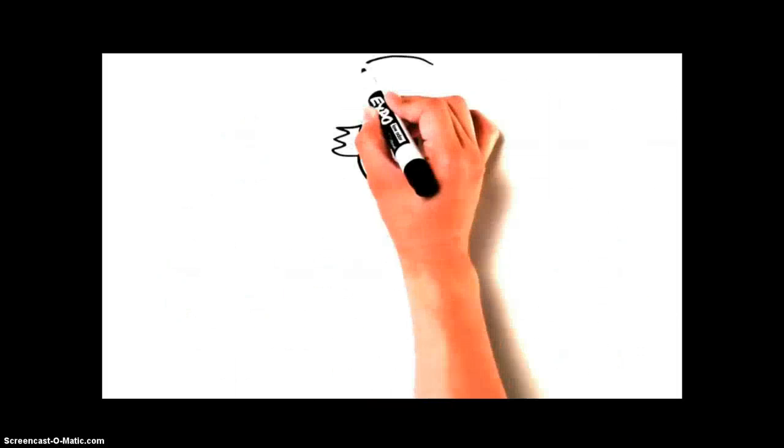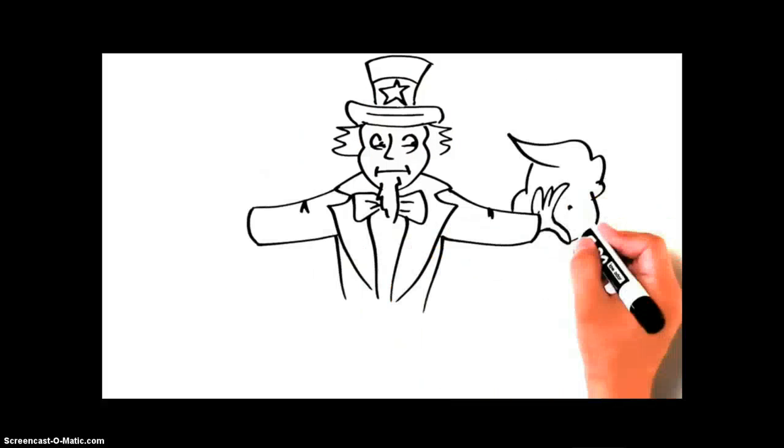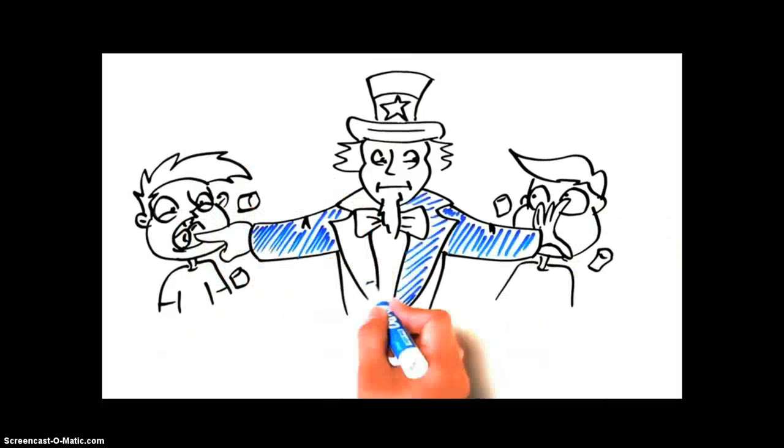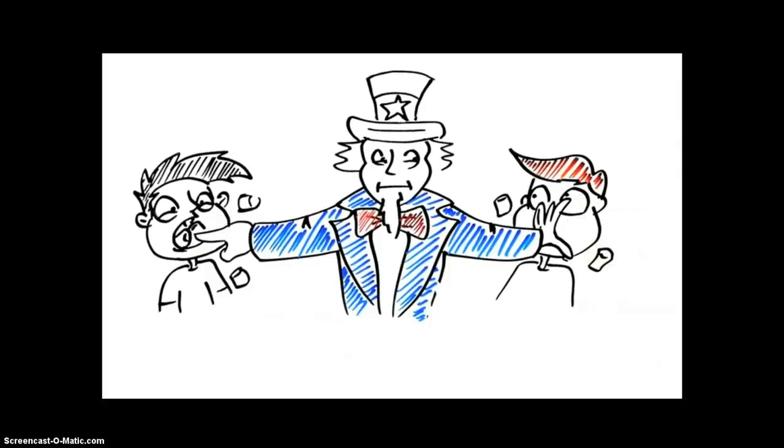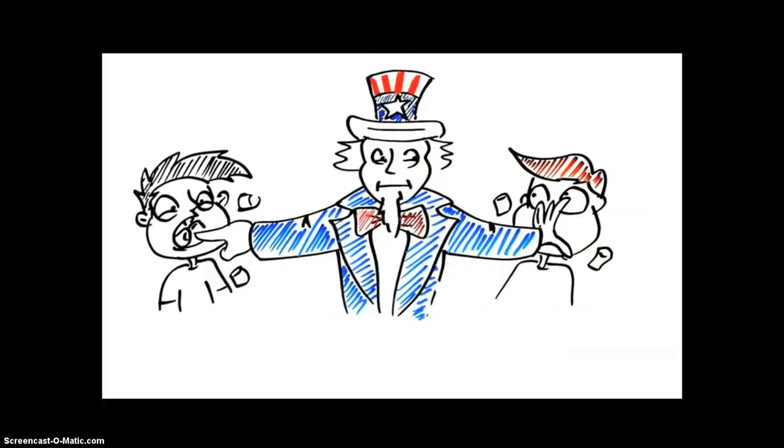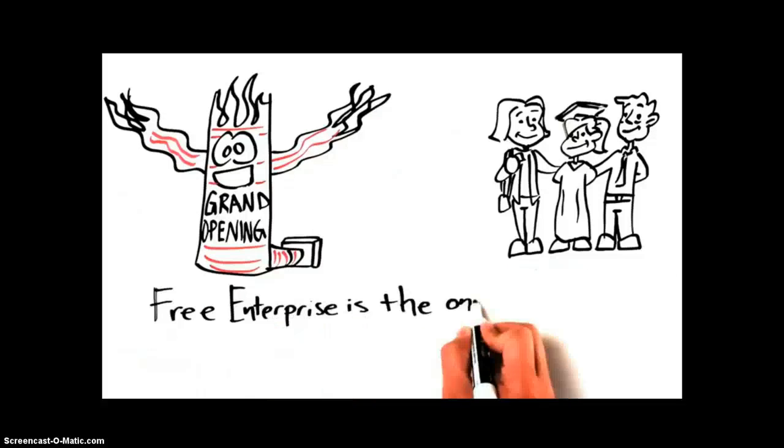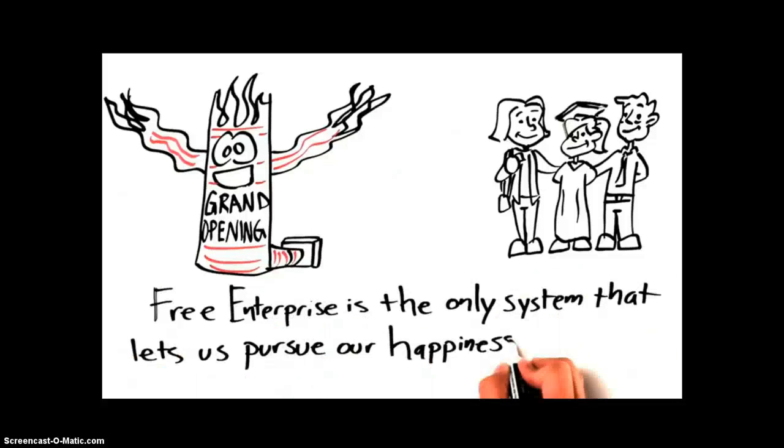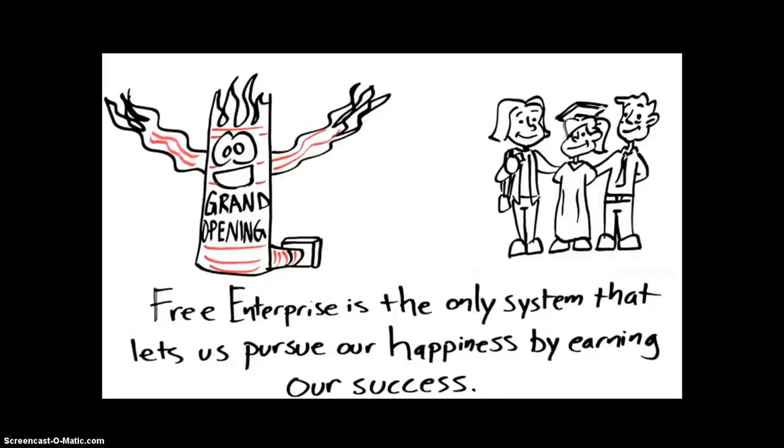Teaching young people to defer their gratification, to earn their success, is clearly in our national interest. But expanding the welfare state is basically just shoving marshmallows into our mouths. Free enterprise is the only system that allows us to pursue our happiness by earning our success. And that's the right thing to do, whether we get rich or not.